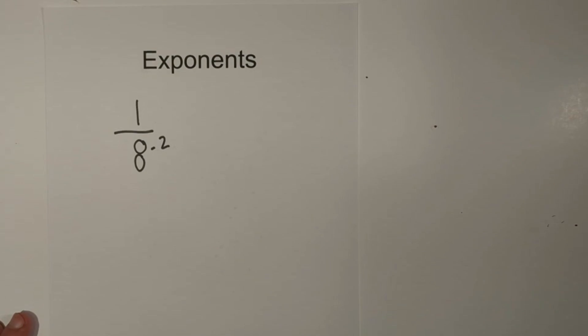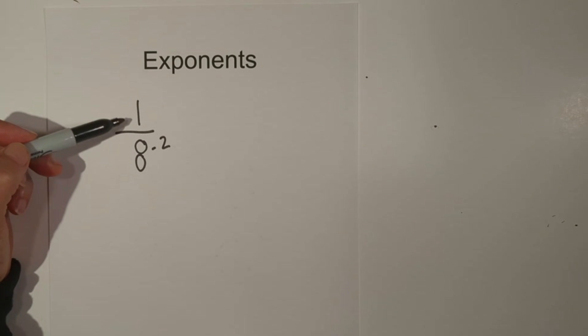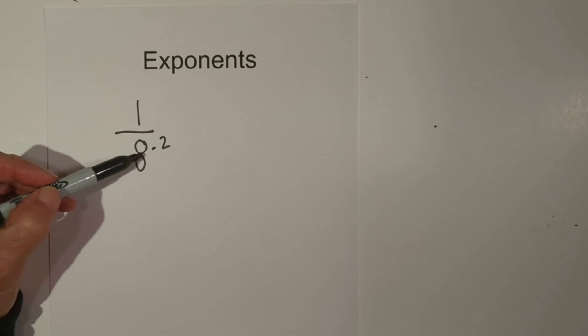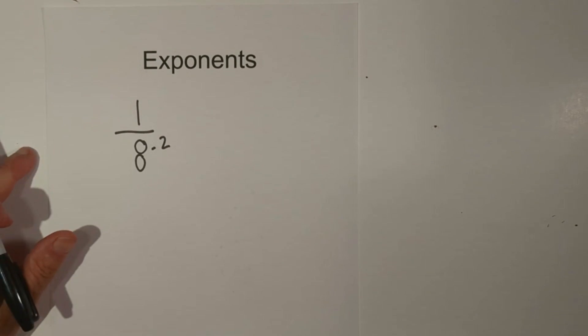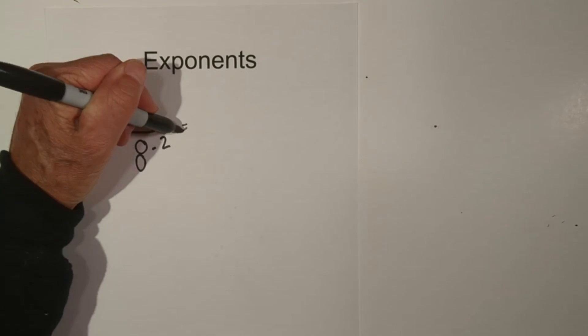Another example. Now you have this example. The numerator is really to the first power, but we have 8 to the negative second power. So to get rid of the negative, we need to use its reciprocal.